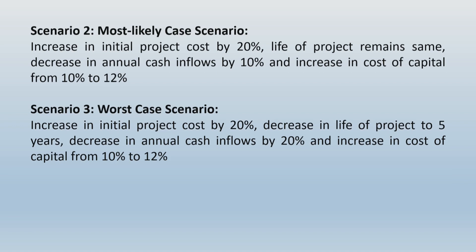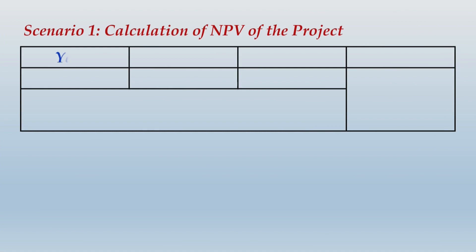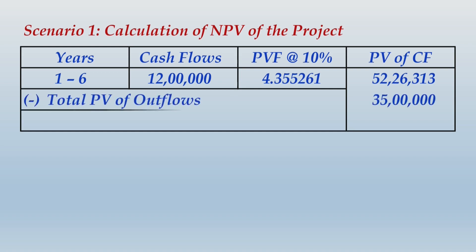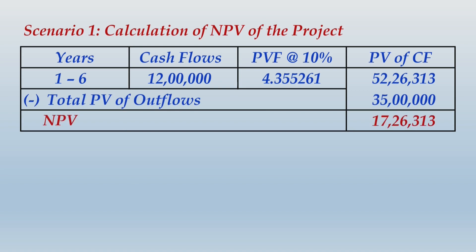Let us compute scenario 1: calculation of NPV of the project. Since cash flows are uniform over 6 years, we use the annuity factor at 10% for 6 years, which comes to 4.355261. The present value of cash flows comes to Rs 52,26,313. Subtracting the cost of the project (present value of outflows), we get the NPV for the best case scenario.